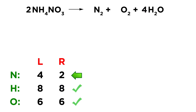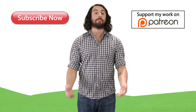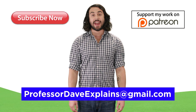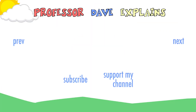Lastly, we just need to do nitrogen. Luckily, N2 is by itself on the right side. To get 4 nitrogen atoms on the right, we put a 2 next to N2 — giving 2 N2 molecules and 4 nitrogen atoms on the right. Nitrogen is balanced, and the equation is balanced. As always, feel free to email me at professordaveexplains@gmail.com. Thank you.